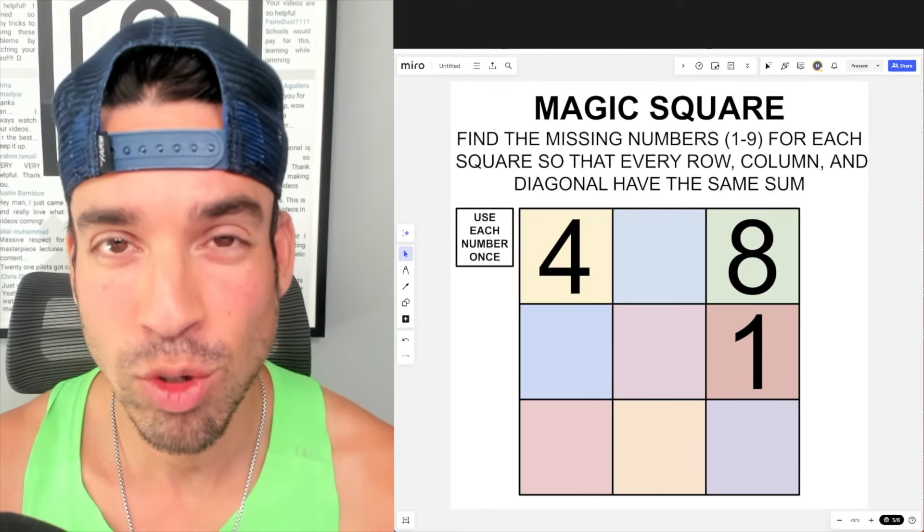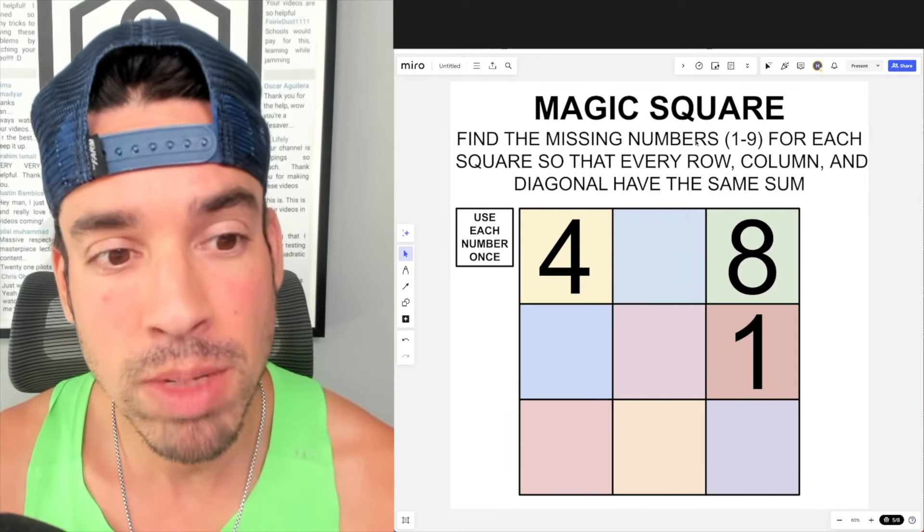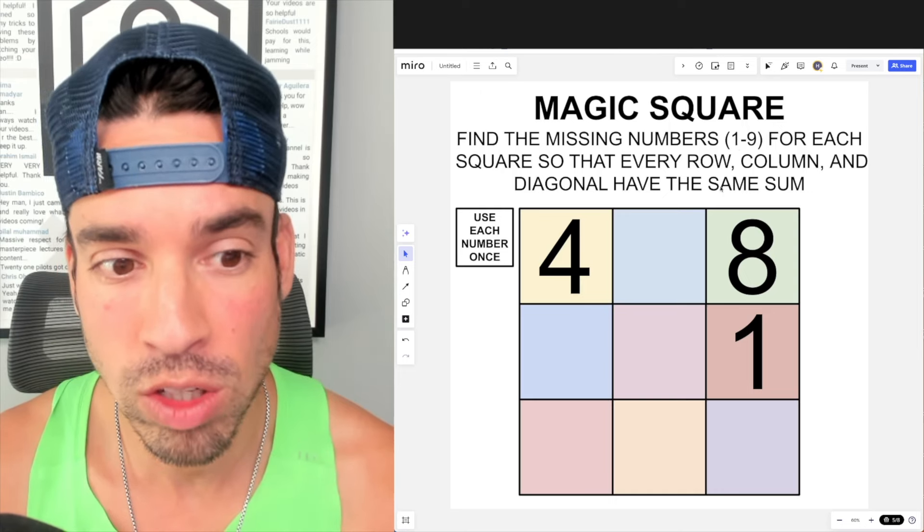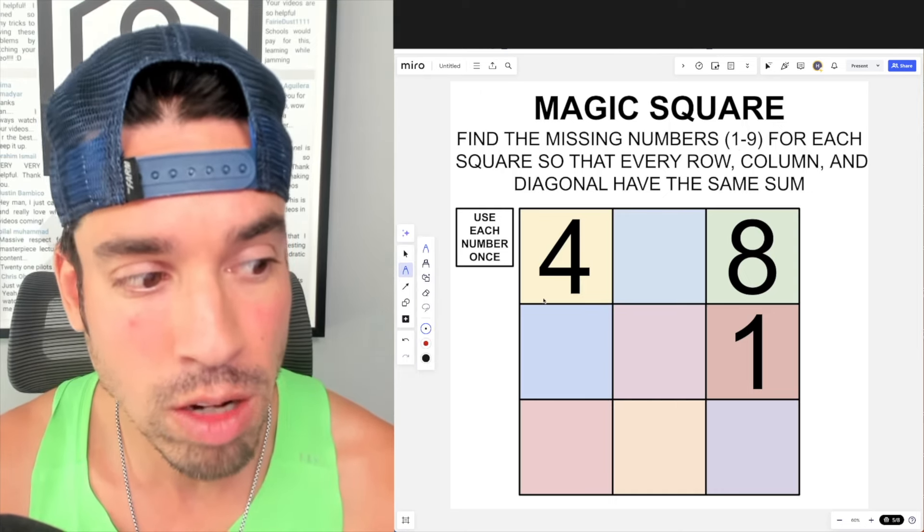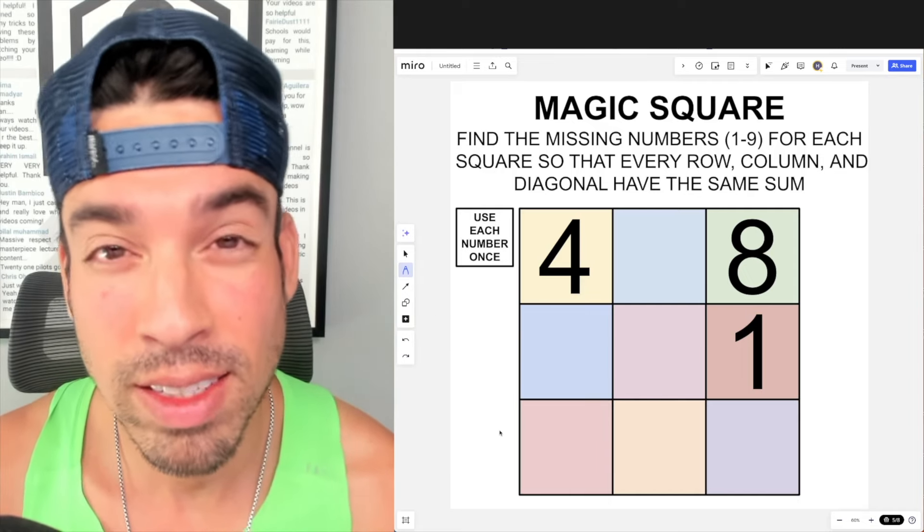What's up everybody and welcome back to another math puzzle. In this one, the question is as follows: find the missing numbers one through nine for each square so that every row, column, and diagonal have the same sum. So of course, the first question you've got to ask is what is that sum? Hit that pause button and see if you can figure it out.